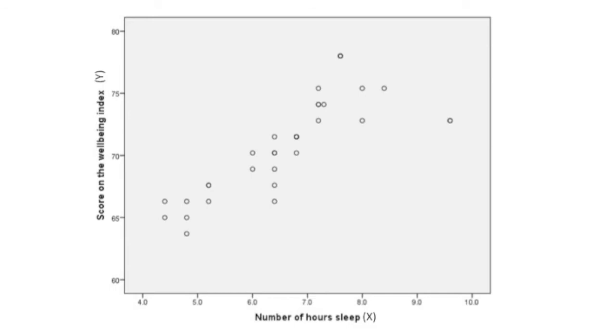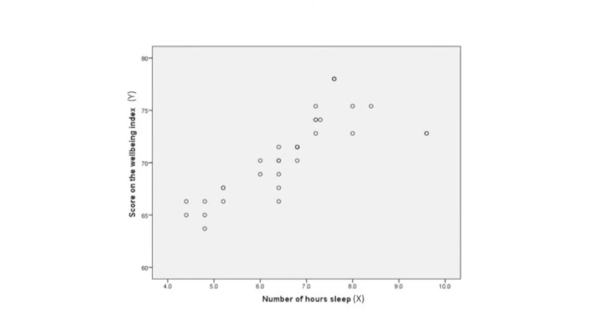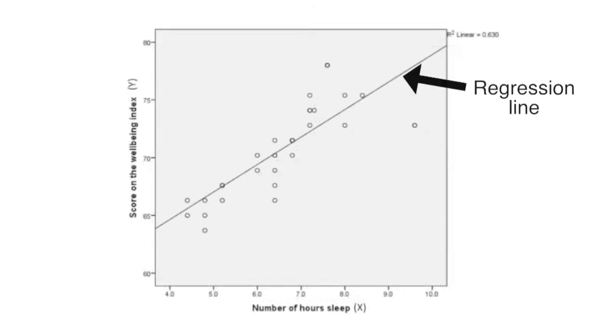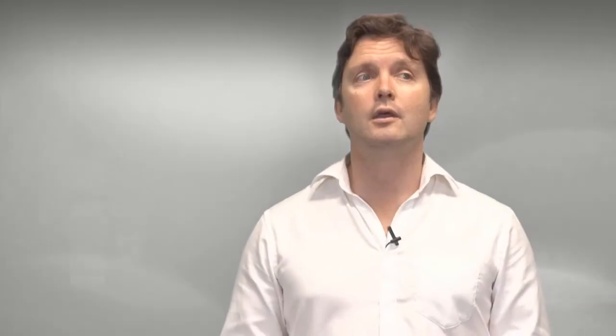To predict mood scores from the number of hours people have slept, we have to create a regression line. Now a regression line reflects our best guess as to what score on the y variable, in this case wellbeing, would be predicted by a score on the x variable, in this case number of hours sleep last night. So it's the line that best fits this data.